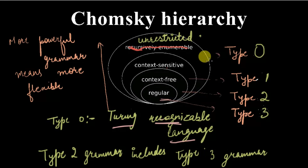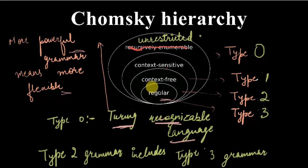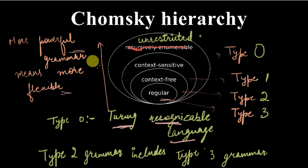As we go from regular language to the unrestricted one, the grammar becomes more powerful and more flexible. As can be seen from the diagram, Type 2 grammar includes Type 3 grammar, and Type 0 grammar includes all of the grammars, and therefore it is the most powerful.